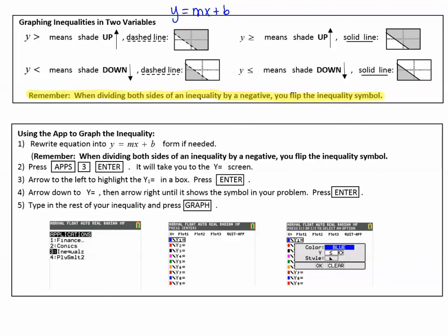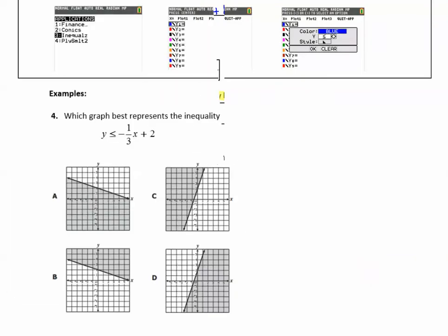Now there's another way to do this if we'd like to use the app to graph the inequality. We still have to rewrite the equation into y equals mx plus b form. We remember when dividing both sides of an inequality by a negative, we flip the inequality symbol. However, we can follow the rest of the directions to know where the shading and what kind of line it's going to look like. Let's go to our calculator, and we're going to press apps, three, enter.